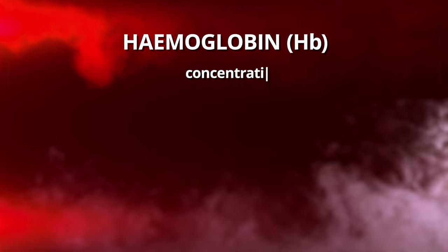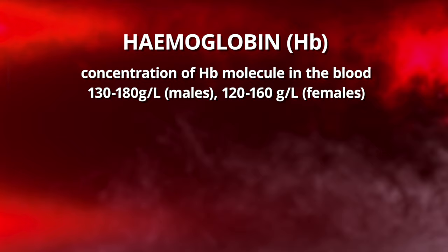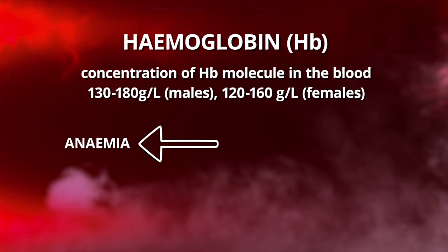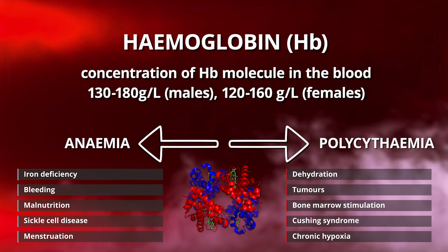Starting with red cells, we get the haemoglobin — the concentration of the haemoglobin molecule in the blood. Reference ranges for all of these tests will be on screen. Be careful with units, as different trusts and health systems use slightly different ranges. In the UK we most commonly measure haemoglobin in grams per litre. A low Hb is referred to as anaemia, and a raised Hb is called polycythaemia or erythrocytosis. If this value is out of range, we can look at the other parts of the full blood count to work out the underlying cause.